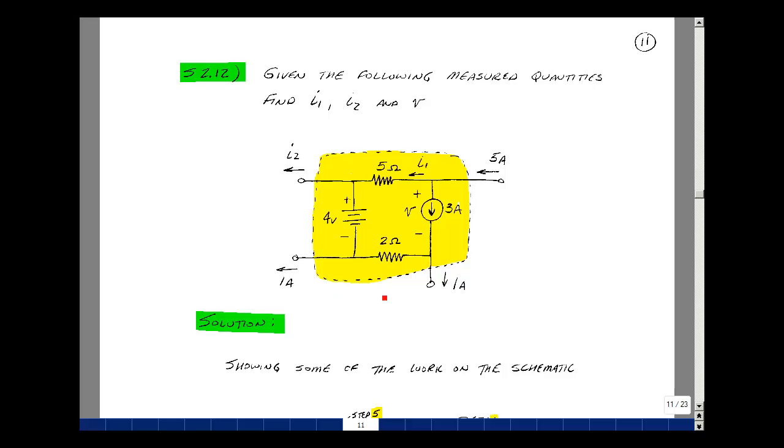Suppose I'm given a piece of a circuit and I have some measured currents. I'd like to solve for the current I1, I2, and the voltage V. I'm going to use Kirchhoff's voltage law and current law and Ohm's law to solve for these two currents and a voltage.